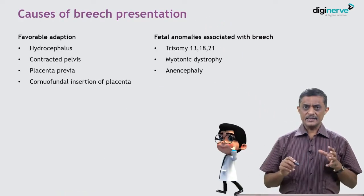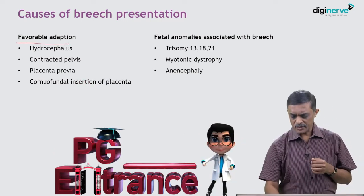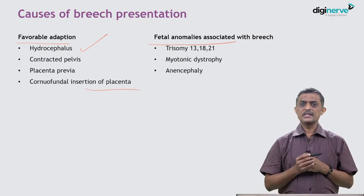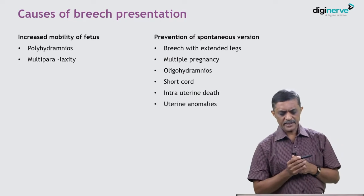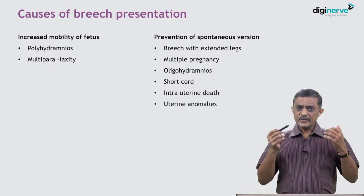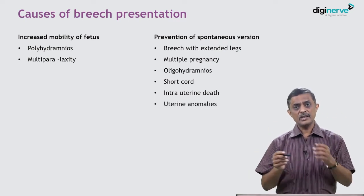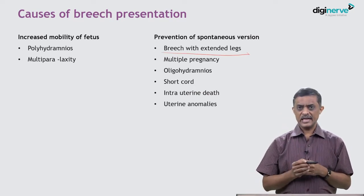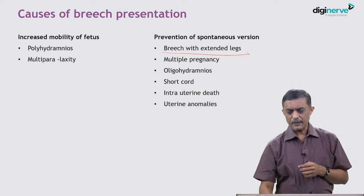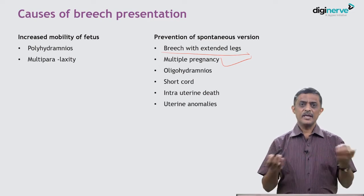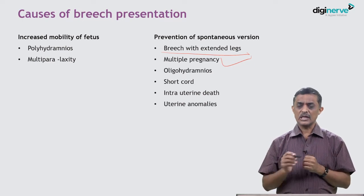Analyzing causes for breech: it could be a favorable adaptation — hydrocephalus, contracted pelvis, placenta previa, cornuofundal insertion — or due to fetal anomalies. Increased mobility in polyhydramnios, multiparity, and preterm also contribute. Normally by 34 to 36 weeks most breech babies revert spontaneously to vertex, but breech with extended legs may not turn easily. Oligohydramnios, short cord, intrauterine death, and uterine anomalies also prevent spontaneous turning.